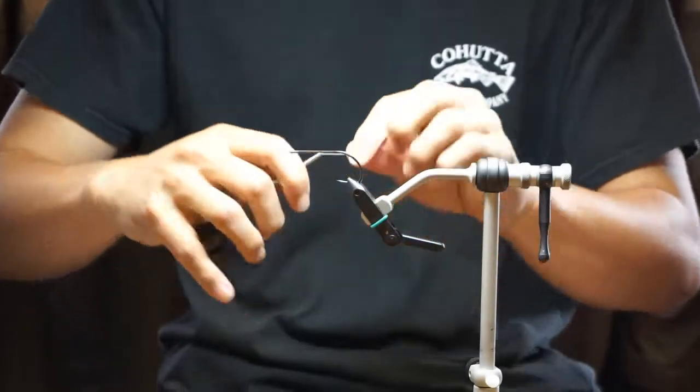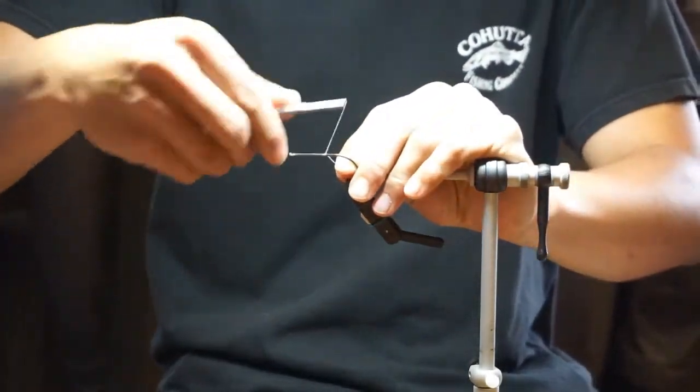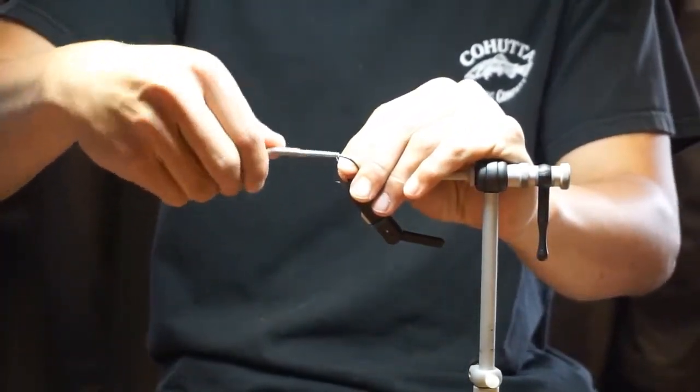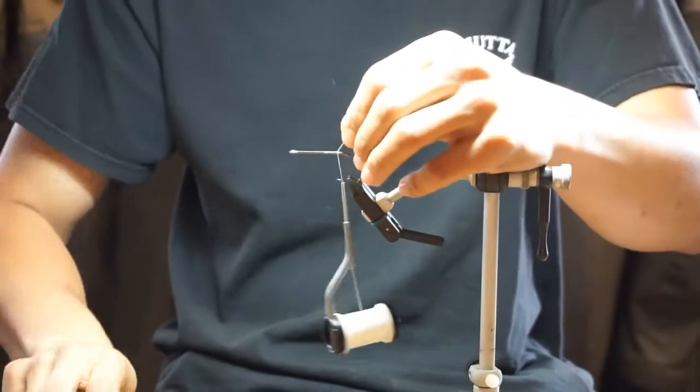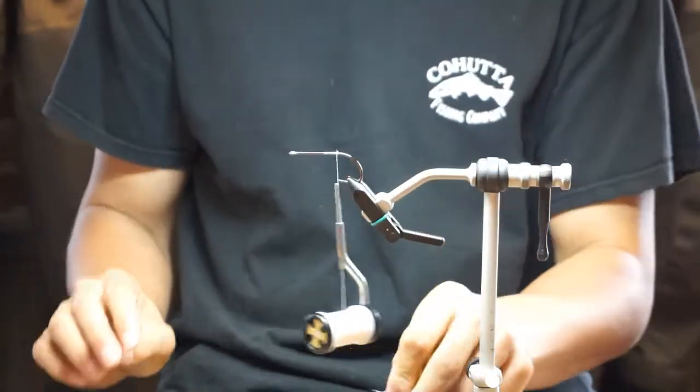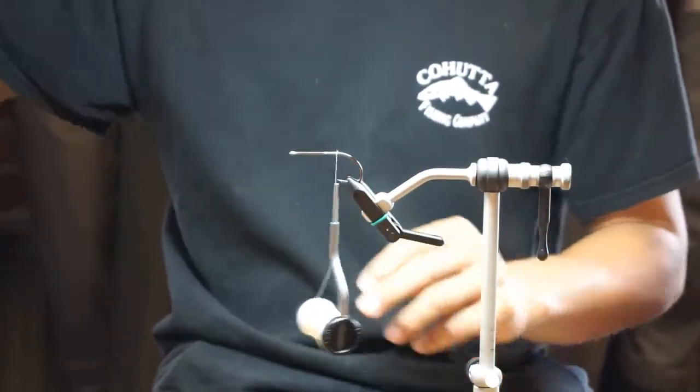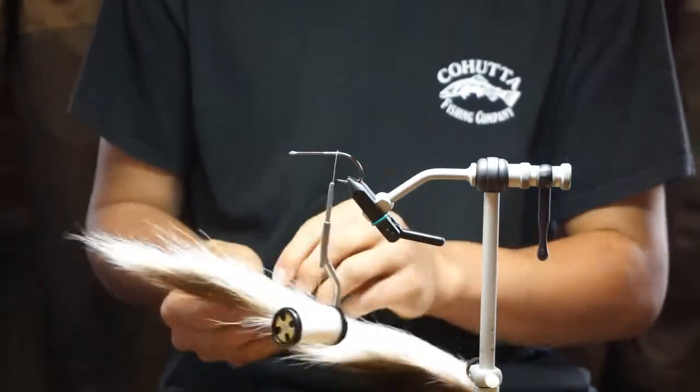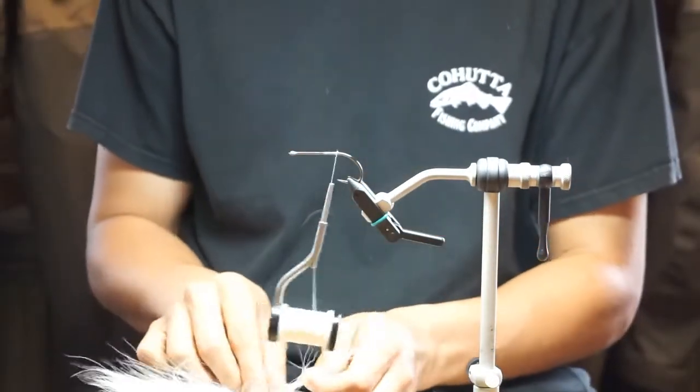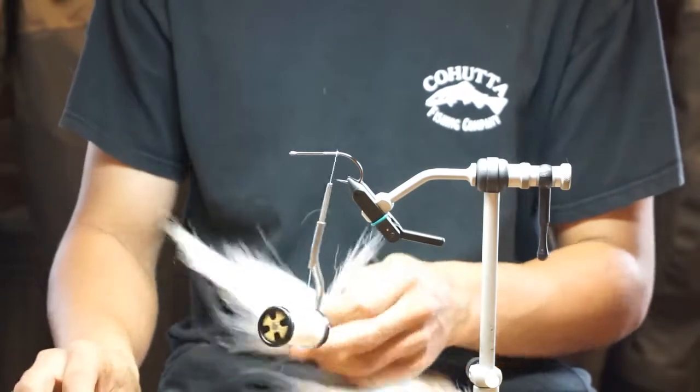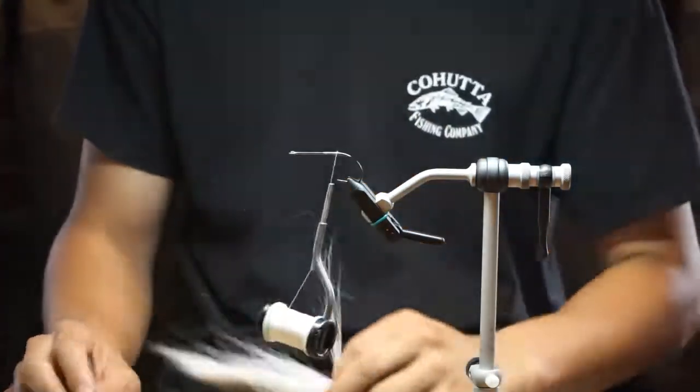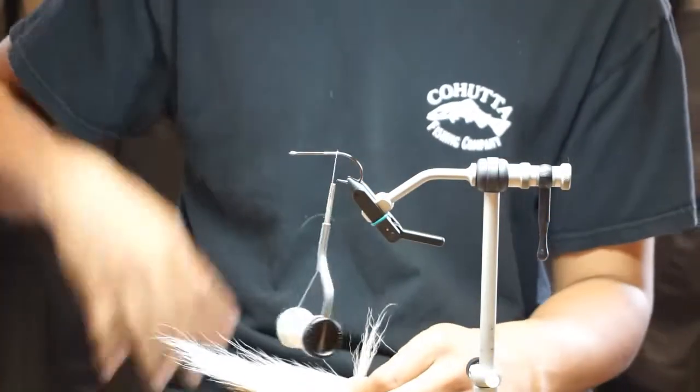Gel Spun Vivas 150. You can also use Ultra Thread in the heavier sizes. You just want a strong thread that you can lay flat and then cord up if you want to. I'm using bucktail. Pretty much all this fly is is bucktail and flash.